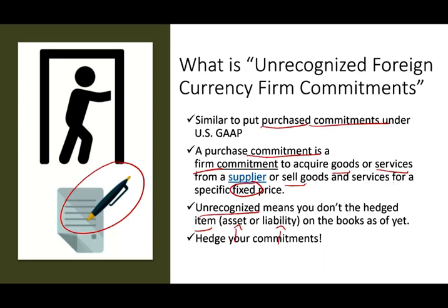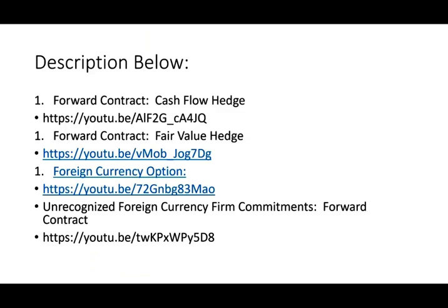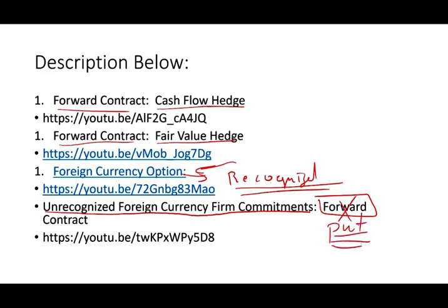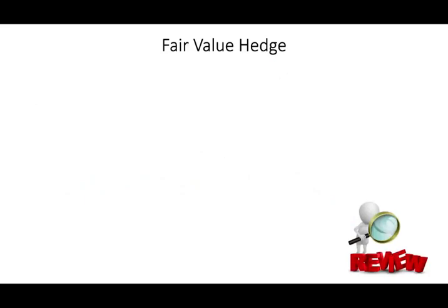We're going to use a put option in this recording. In hedge accounting, you could have many combinations. We previously talked about forward hedges treated as cash flow hedges or fair value hedges, and foreign currency options used to protect recognized assets. Here, we're dealing with unrecognized foreign currency commitments. In a prior session, we used a forward contract for this. In this session — the fifth session — we remove the forward and use a put option instead, working through the same example.